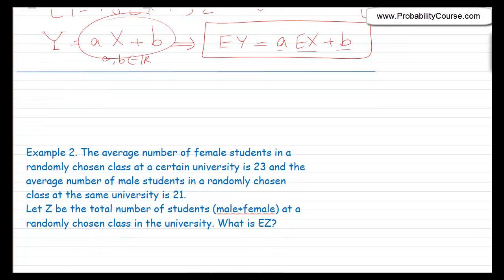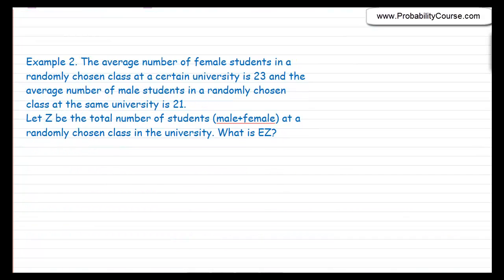Let's look at another example. The average number of female students in a randomly chosen class at a certain university is 23, and the average number of male students in a randomly chosen class at the same university is 21. So random variable x is the number of female students in a random class, with E[x] = 23, and y is the number of male students, with E[y] = 21.